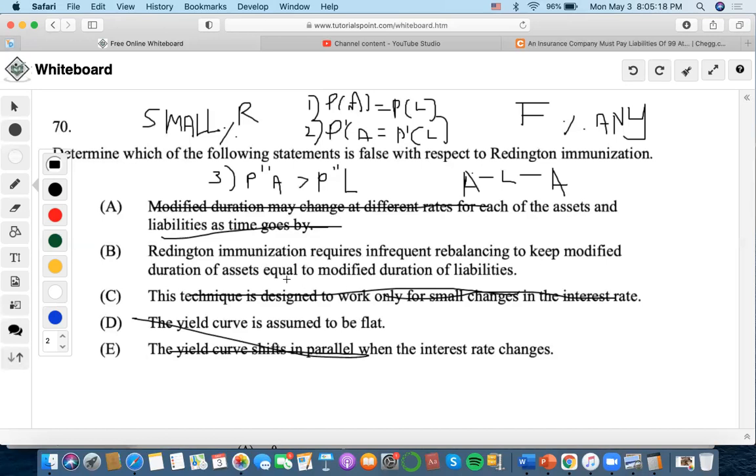So I guess we're left with B. Requires infrequent rebalancing to keep modified duration of assets equal to the modified duration. Yes, B is wrong. Why? Because the second rule says that we want to make sure that the durations of assets and liabilities are equal to each other, not modified duration, right? And that is why B is the answer.